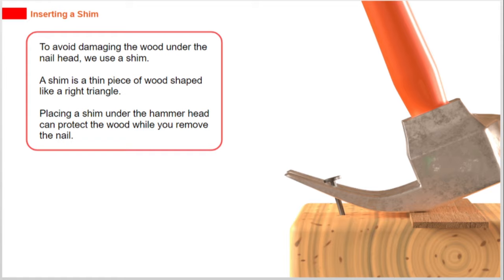A shim is a thin piece of wood shaped like a right triangle. Placing a shim under the hammer head can protect the wood while you remove the nail.